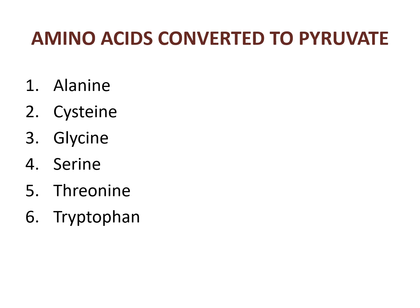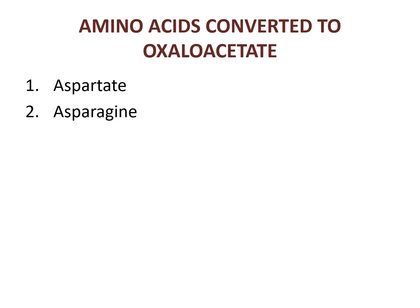Amino acids converted to pyruvate are: alanine, cysteine, glycine, serine, threonine, and tryptophan. Amino acids converted to oxaloacetate are aspartate and asparagine.